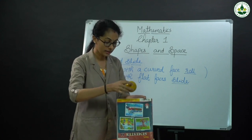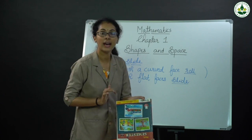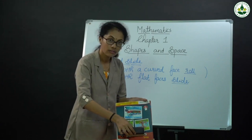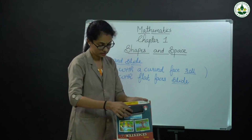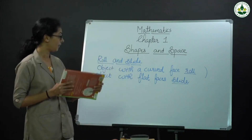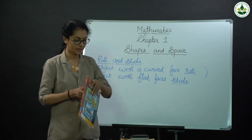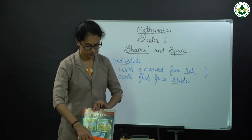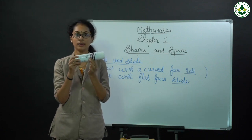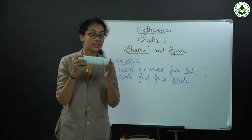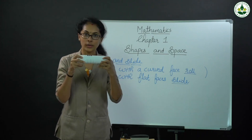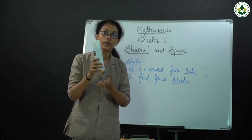Object with a curved face — what is the face of this ball? Curved face. Then they can roll. Then object with flat faces — flat faces means slide. Object with flat faces can slide. Object with curved faces can roll. This one is a curved face, so it is a rolling object.